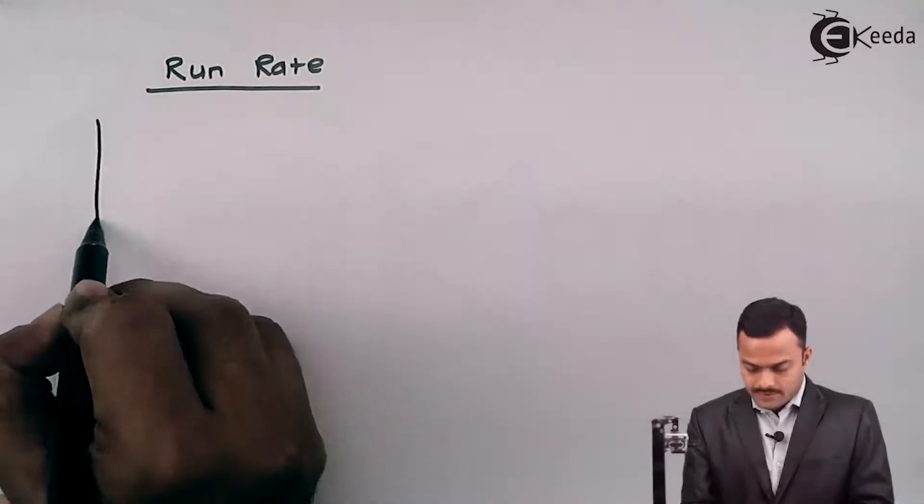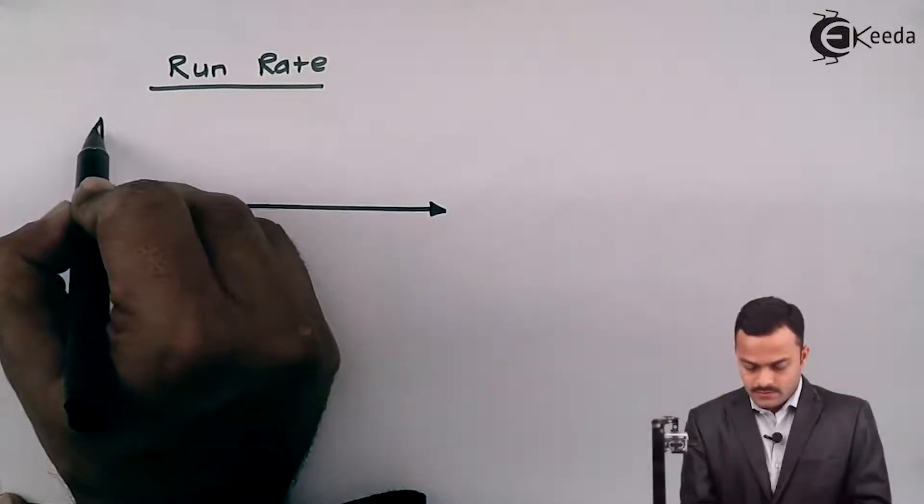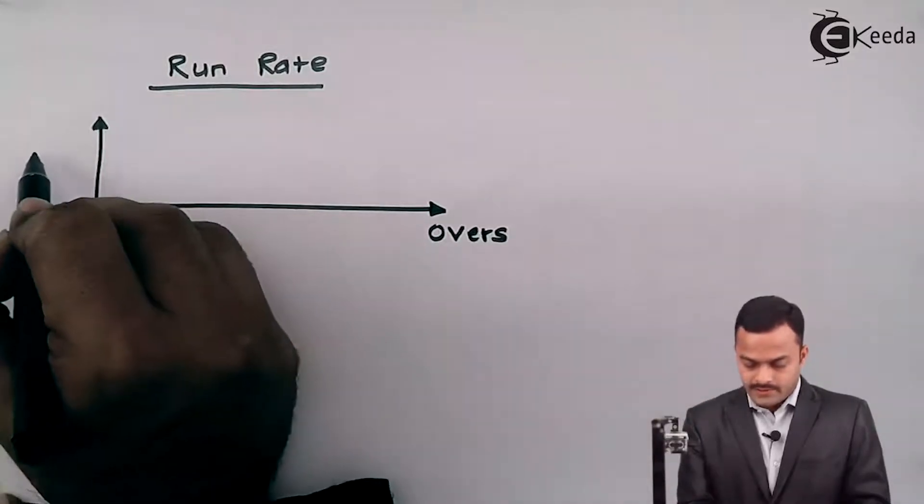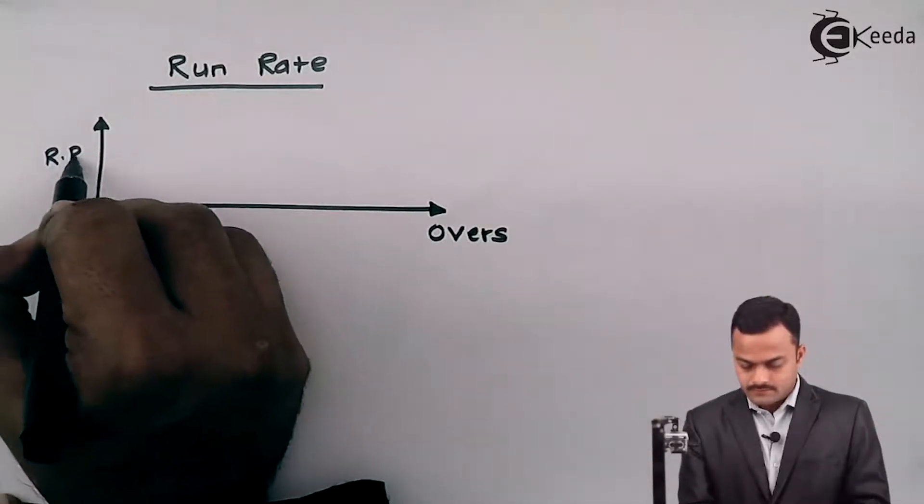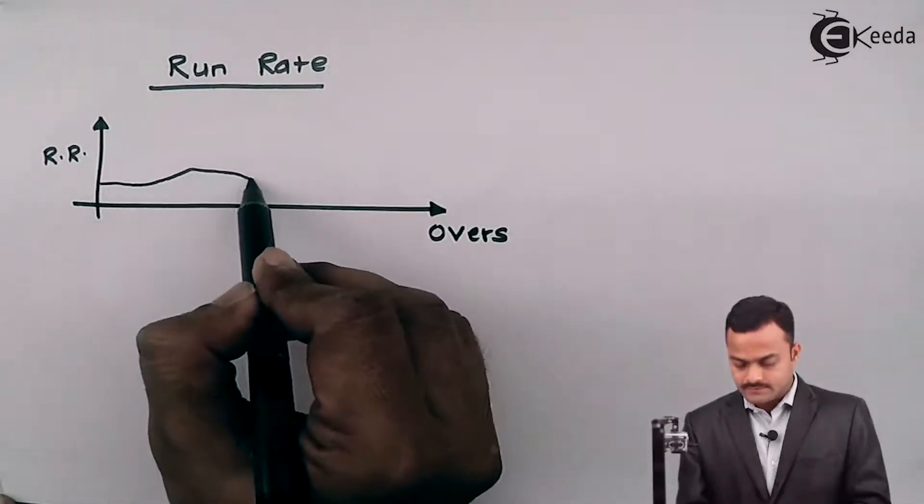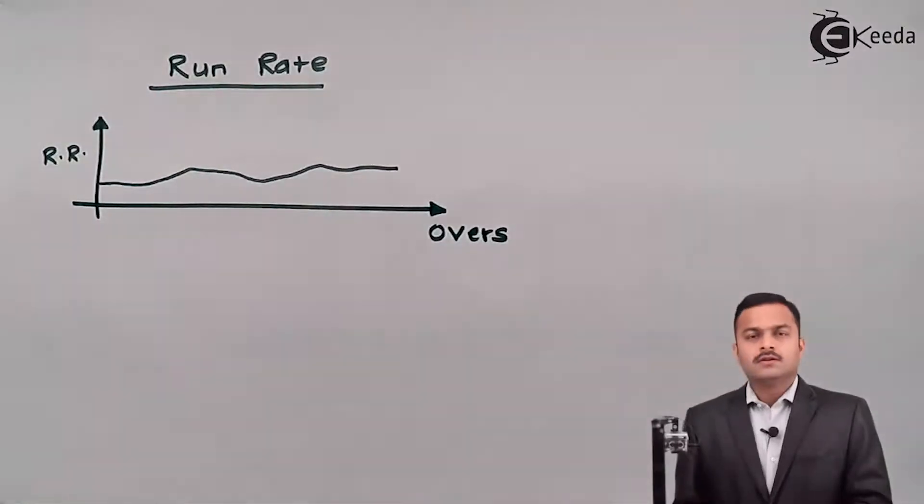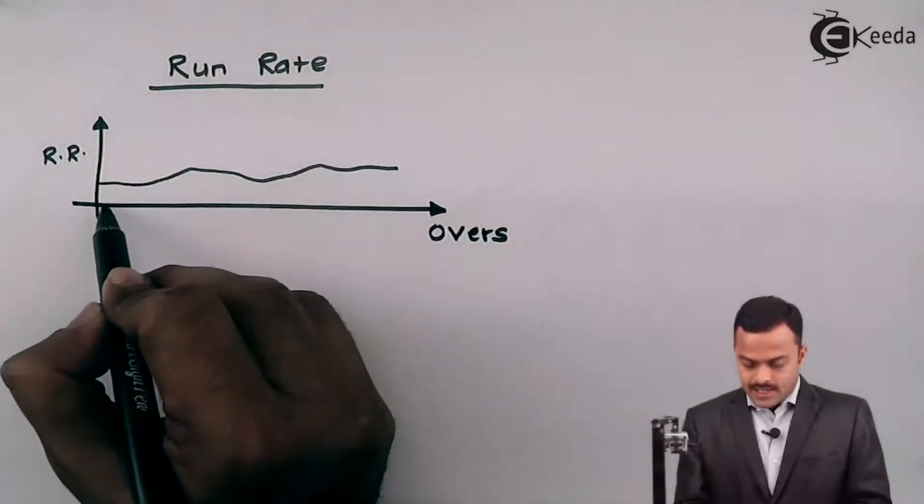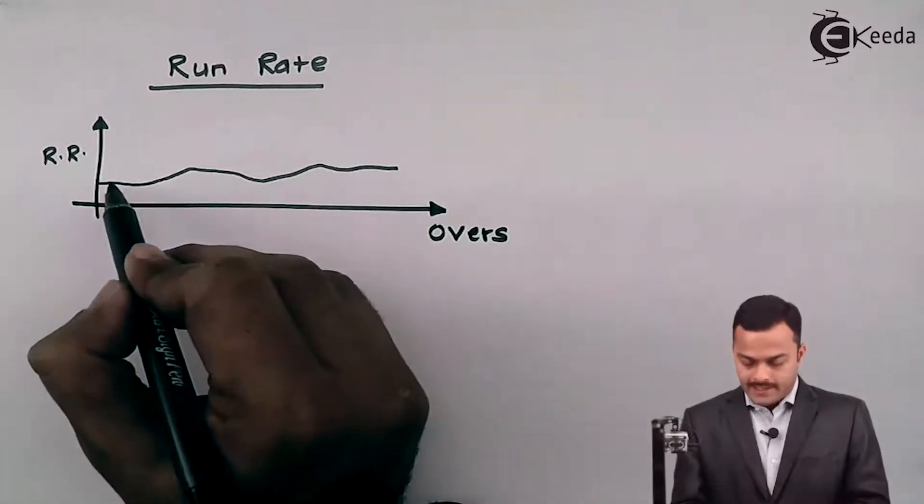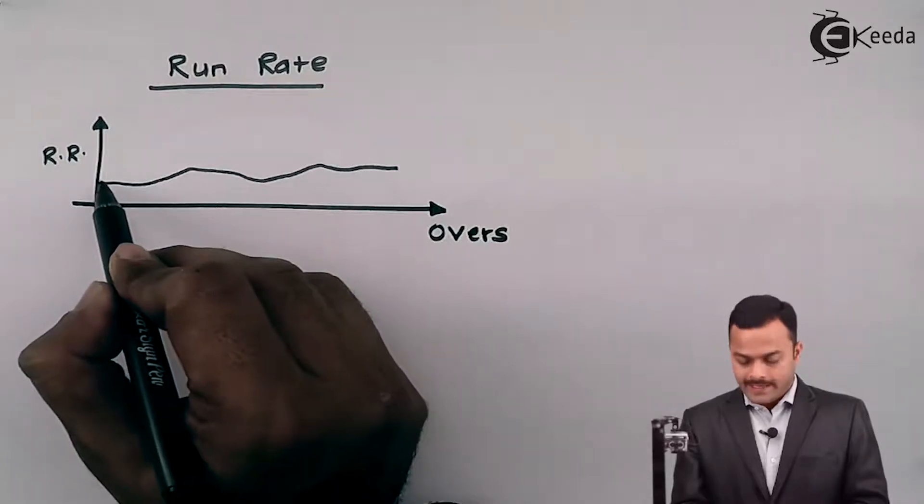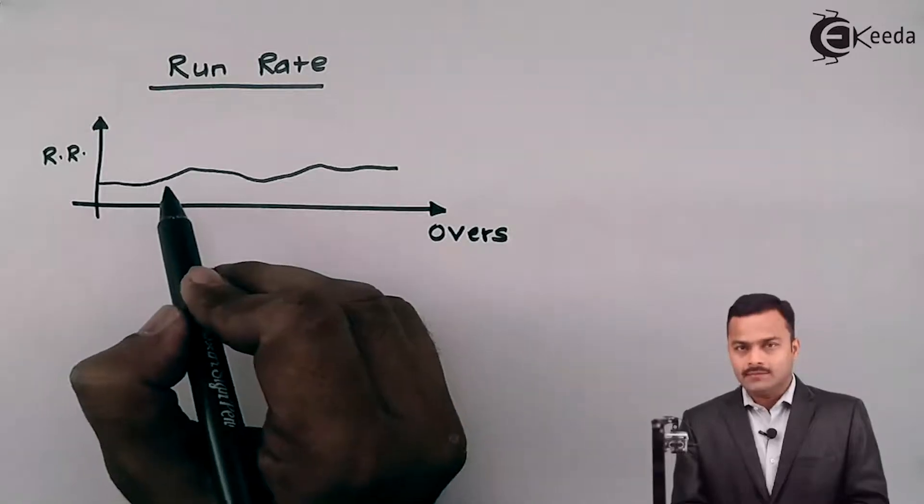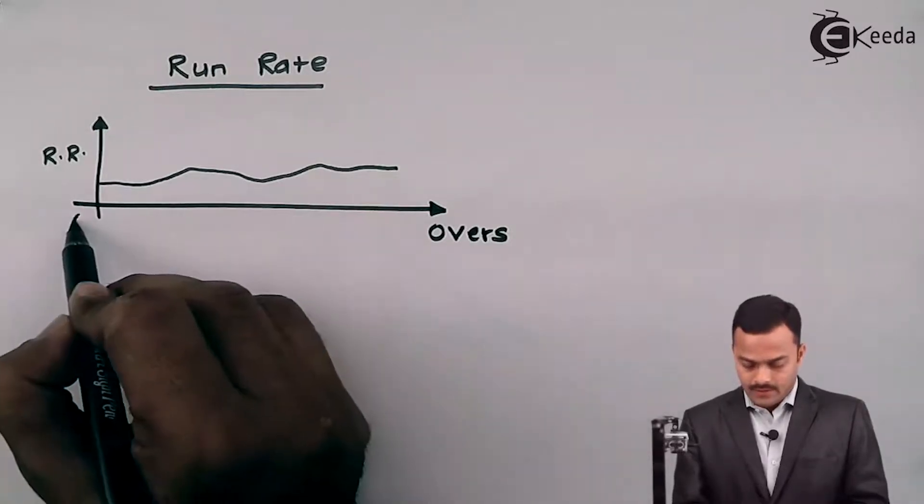So it is something like this: number of overs and then run rate, and we have a normal graph like this. So what it is saying, there are number of overs bowled and in between the overs also I can decide or I can check what is the run rate of that particular team who is batting.